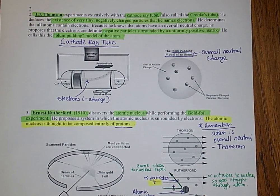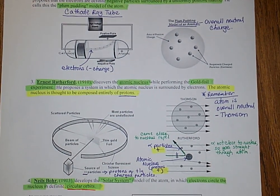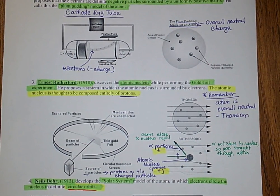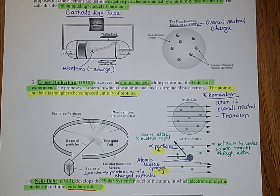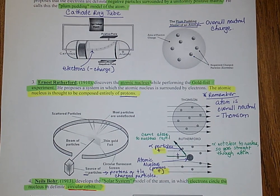Our next scientist is Ernest Rutherford. He came along in 1910 and discovered the atomic nucleus while performing the gold foil experiment. He proposed a system in which the atomic nucleus is surrounded by electrons, and he said the atomic nucleus is composed entirely of protons.